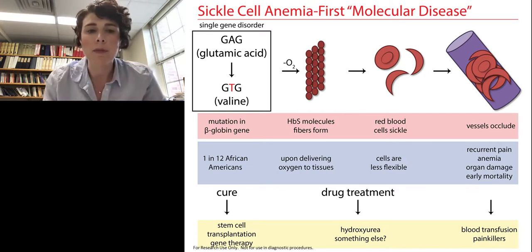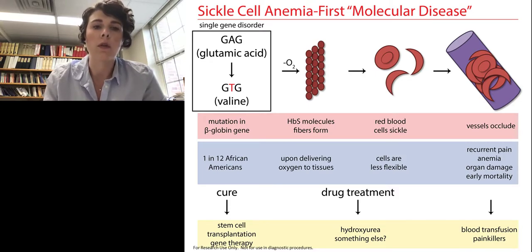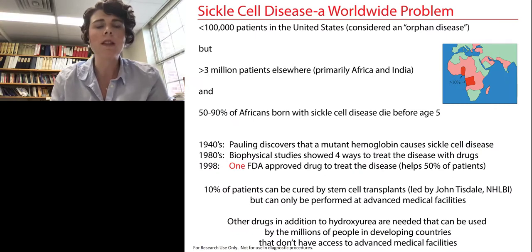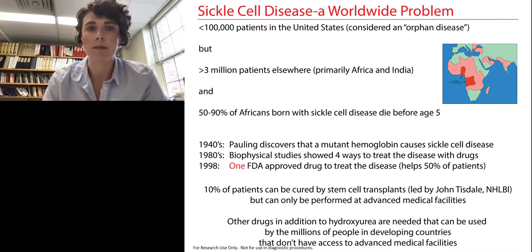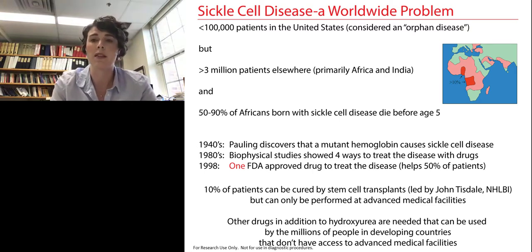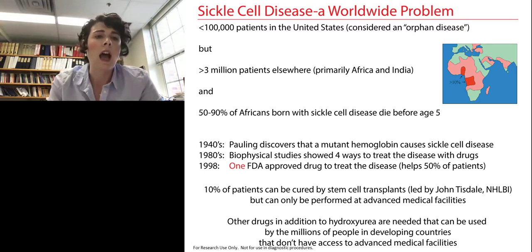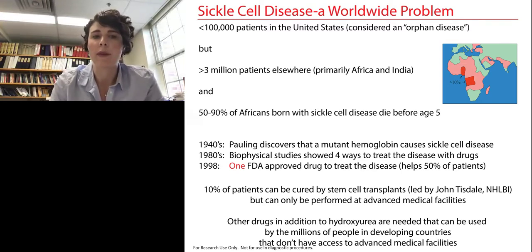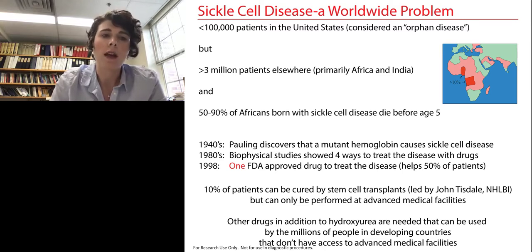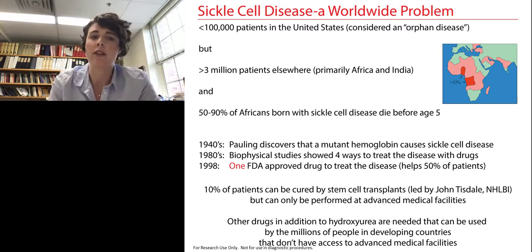In the absence of a cure or a drug to treat the disease, people with sickle cell disease are left to get blood transfusions during painful sickle crises and are also given painkillers to treat the pain. Neither of these are great options, and so we are looking for a new drug. Sickle cell disease is a worldwide problem. In the United States, fewer than 100,000 people have the disease, so it's considered an orphan disease. But there are more than 3 million people worldwide, primarily in Africa and India. Between 50 and 90% of Africans who are born with sickle cell disease die before the age of five.